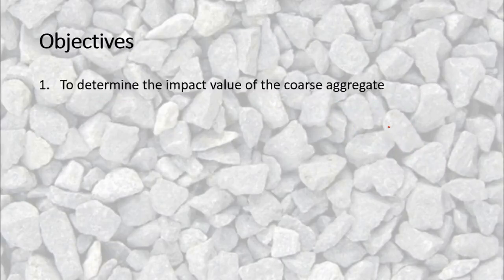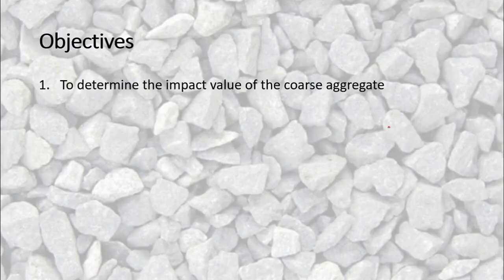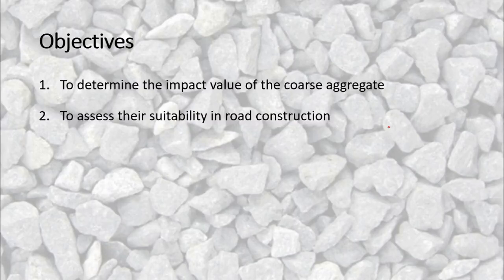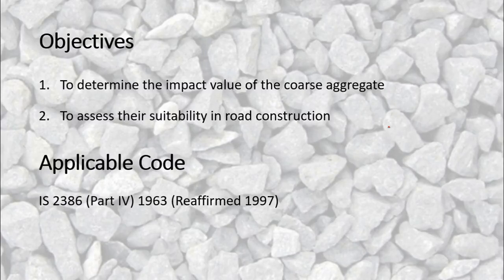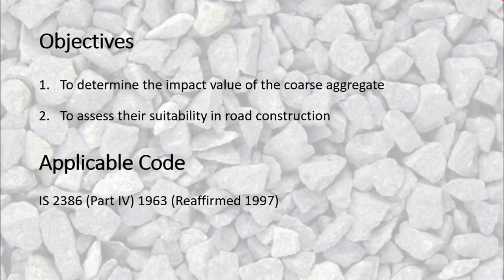The objectives of this practical are: first, to determine the impact value of the coarse aggregate; and second, to assess whether the impact value obtained makes the aggregate suitable for road construction. The applicable code is IS2386 Part 4, which is the code for aggregate testing — specifically Part 4, which relates to mechanical properties of aggregate.